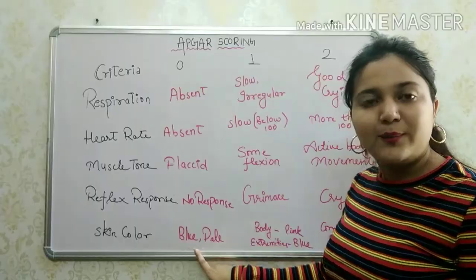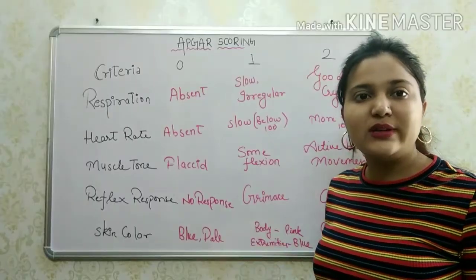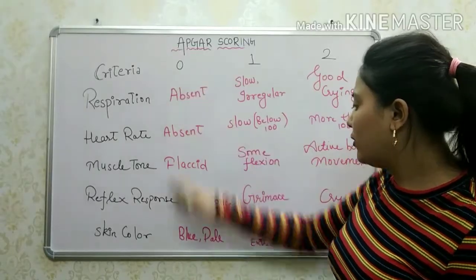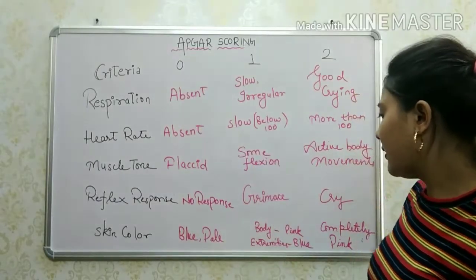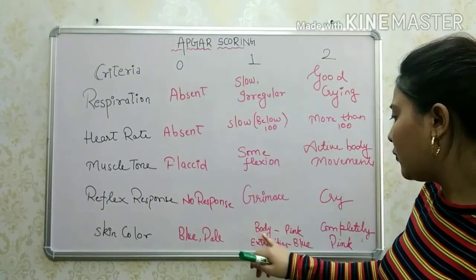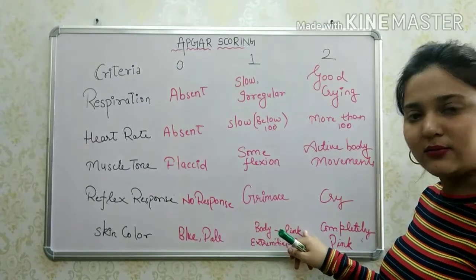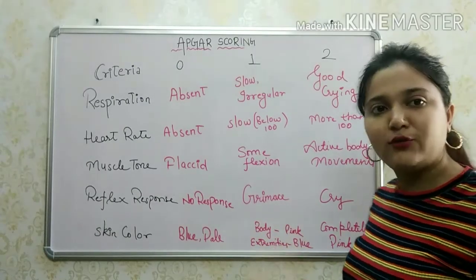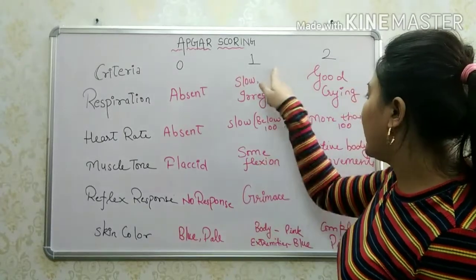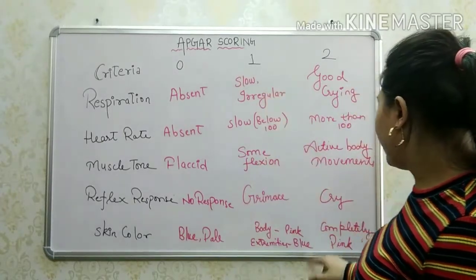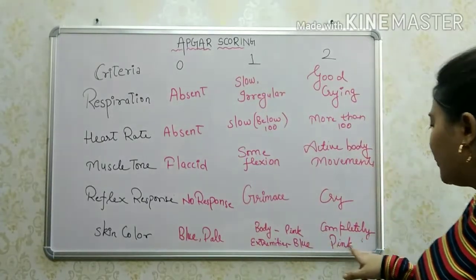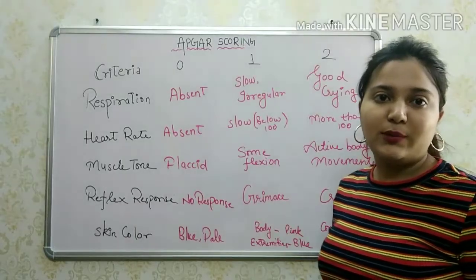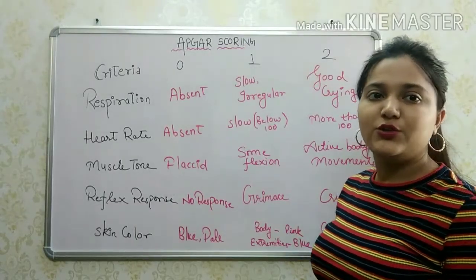For skin color: if the skin color is blue or pale, we score 0. If the body color is pink but the extremities are blue, we score 1. If the body is completely pink, we score 2.